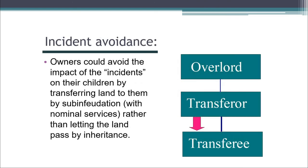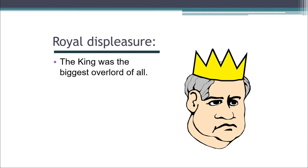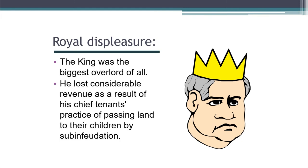Tenants in this system and their lawyers realized fairly quickly that they could avoid the impact of these incidents on their children by transferring land to them by sub-infeudation while they were alive, charging only nominal services, rather than letting the land pass to their children by inheritance. If that occurred, the tenant's overlord would not become the children's overlord, and the overlord would not be able to collect those feudal incidents from the children. The king, being the biggest overlord of all, lost considerable revenue as a result of his chief tenants' practice of passing the land by sub-infeudation rather than by inheritance.